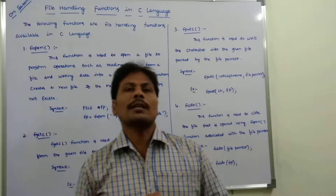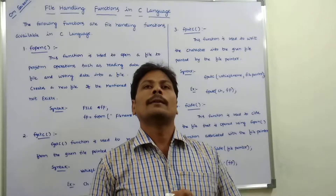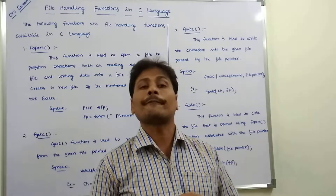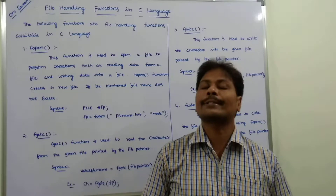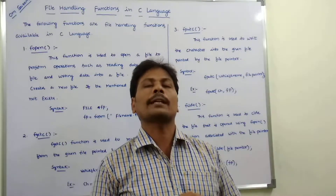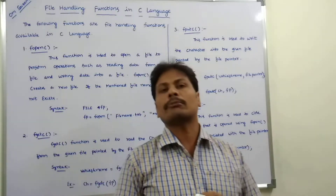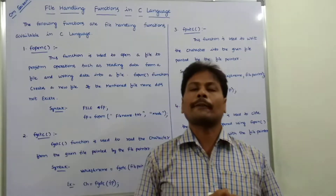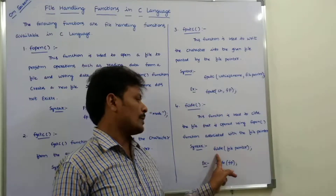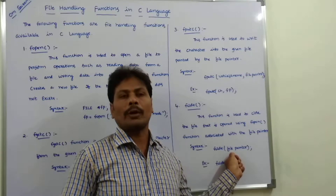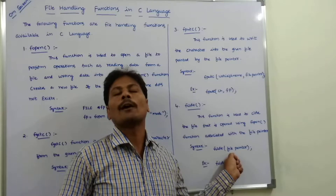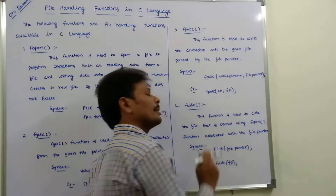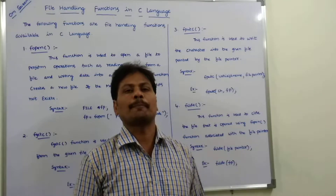Next is the fclose function. This function is used for closing the file that is already open using the fopen function. Whatever file we have opened for performing either a read or write operation is closed after completing the operation. The syntax is: fclose(fp); where fp is the file pointer pointing to the corresponding file.